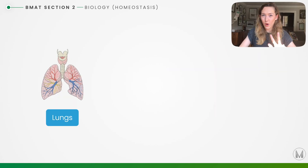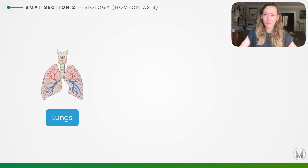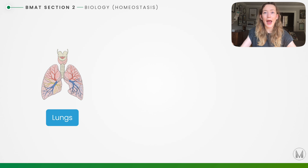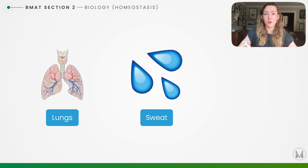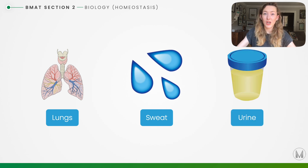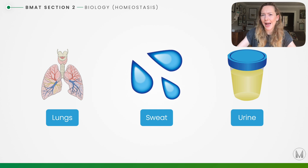We can lose water in three main ways — one often forgotten is the lungs. When we breathe out we release water vapour, and we can't control how much water is lost this way. Water and ions are also lost in sweat, and even when water levels are really low we will still sweat, so we can't control this either. Urine production is our main source of water excretion and we can partly control this because urinating is a voluntary action.